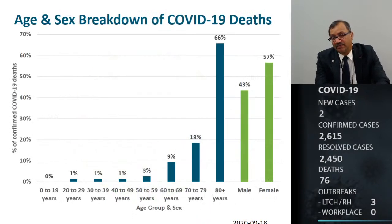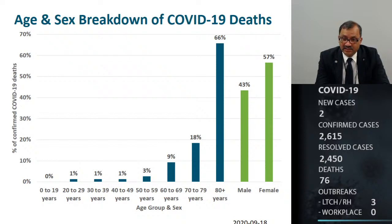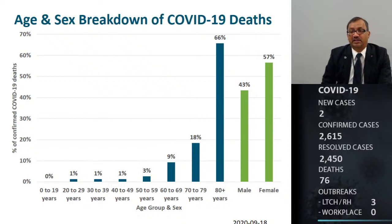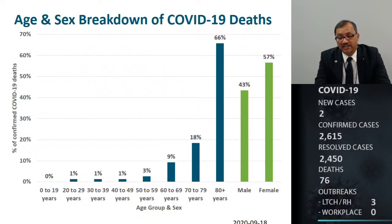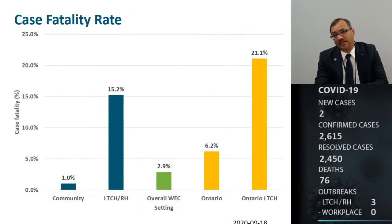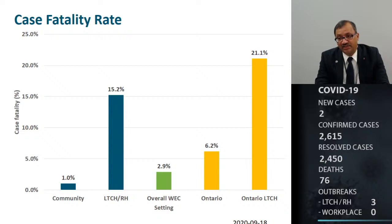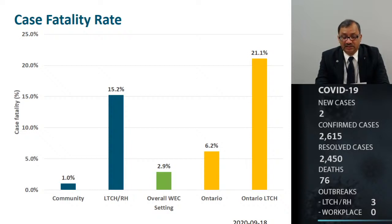Among those who lost their life as a result of COVID, the majority are females, and the highest age group is 80 years and older. Our youngest death in the region was a gentleman in his 20s. Looking at the case fatality rate in Windsor-Essex, we continue to have a low case fatality rate compared to the provincial average, and similarly in the long-term care home setting, reflecting a good health system response and our ability to manage sick patients in our region.